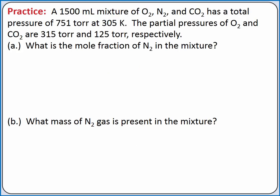Let's practice using Dalton's law of partial pressures. A 1500 milliliter mixture of oxygen, nitrogen, and carbon dioxide has a total pressure of 750 torr at 305 Kelvin. The partial pressures of oxygen and carbon dioxide are 315 torr and 125 torr, respectively. For Part A, what is the mole fraction of nitrogen in the mixture?